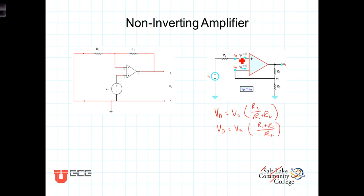So V sub P equals V sub S, V sub N equals V sub P due to the virtual short, and we have then that V out, again replacing V sub N with V S, V out is equal to V sub S times R1 plus R2 over R2.